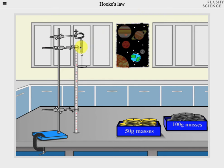On the screen you'll see a spring, a holder for the masses, a ruler for measuring the position of the mass holder, a collection of 50 gram and 100 gram masses, and a poster through which you can travel the solar system.